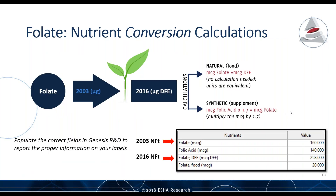To convert folate: micrograms of food folate translates directly to micrograms of DFE, and to convert folic acid to DFE, multiply micrograms of folic acid by 1.7. In Genesis, the field labeled 'folate micrograms' represents total folate for the 2003 label, and 'folate DFE' is used for the 2016 label. Food folate equals naturally occurring folate; folic acid is the synthetic form. These fields are used for record-keeping and by the Genesis nutrient calculator. Many products are enriched with folic acid to meet a fortification level, but you may need to ask suppliers for more detail about folate if the source is unclear.